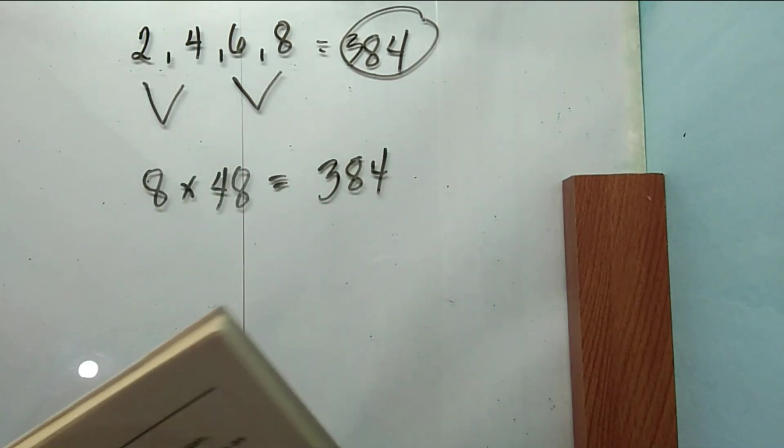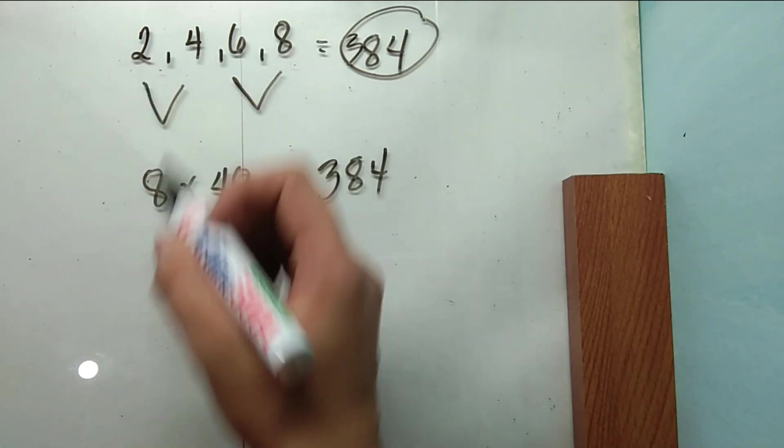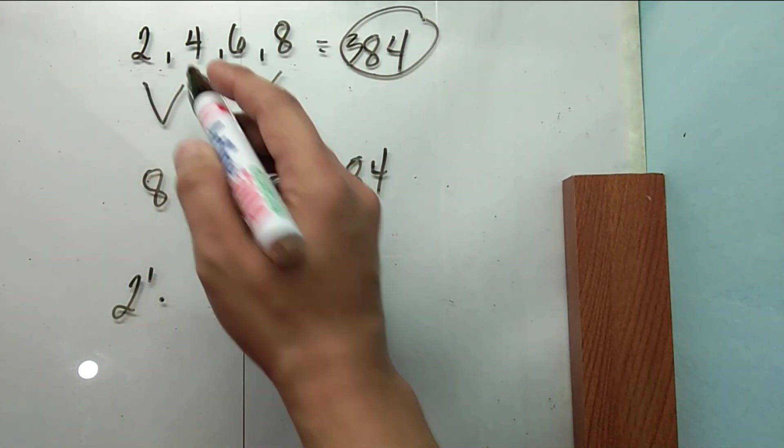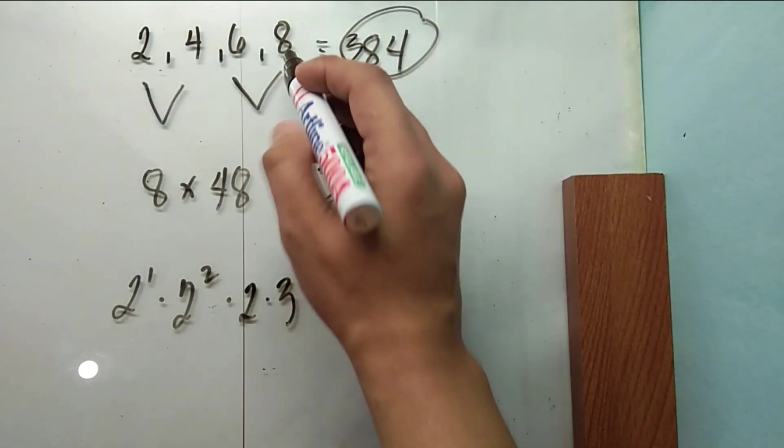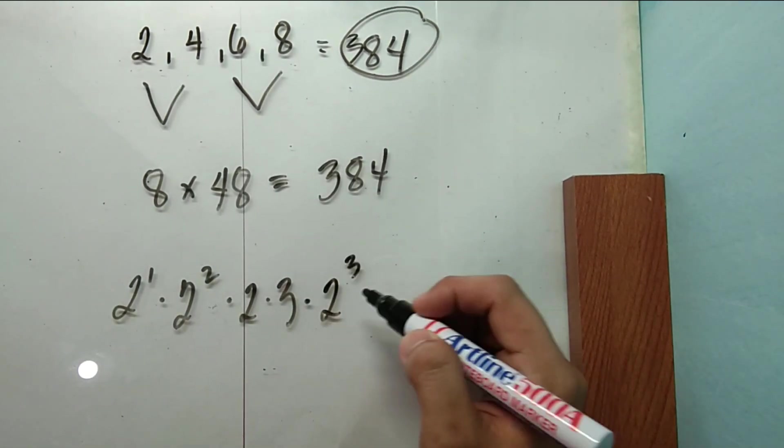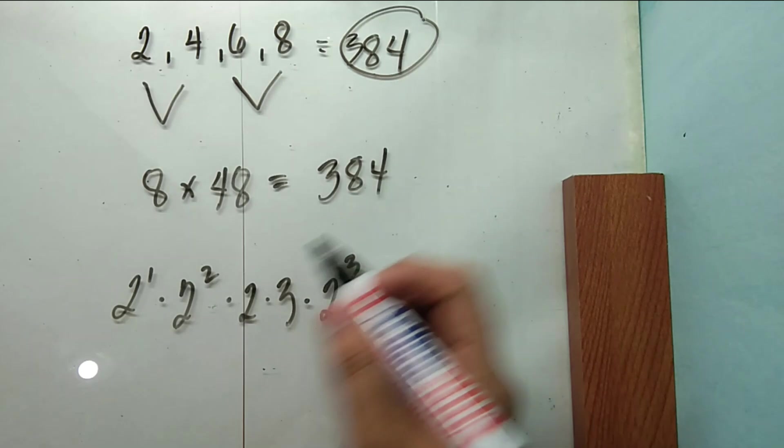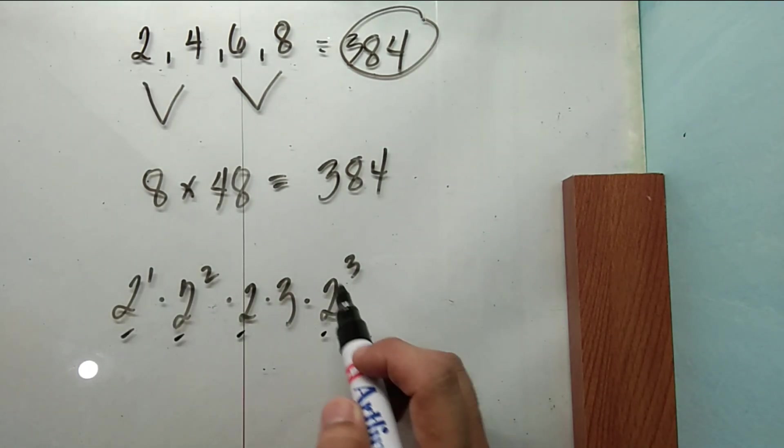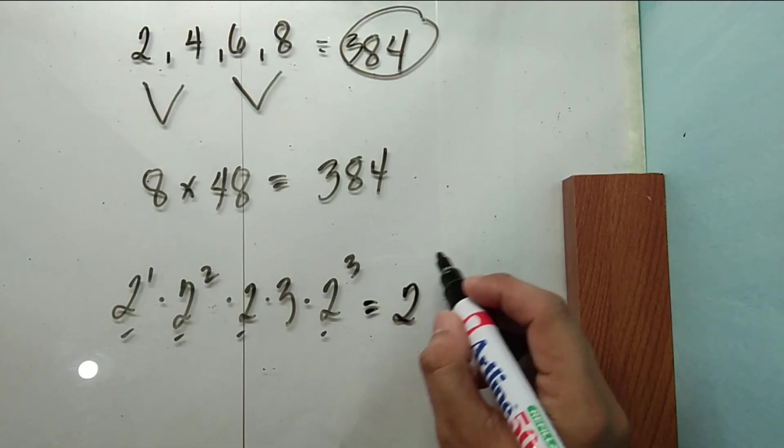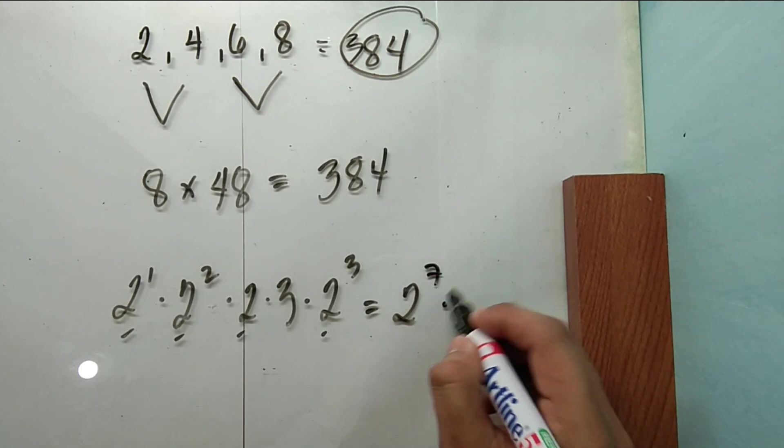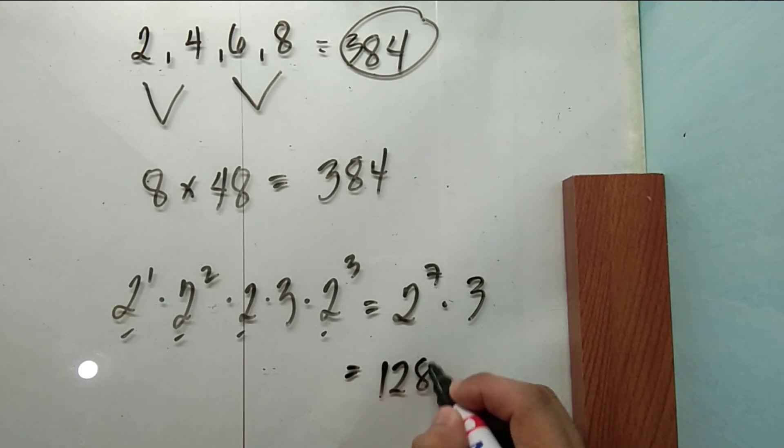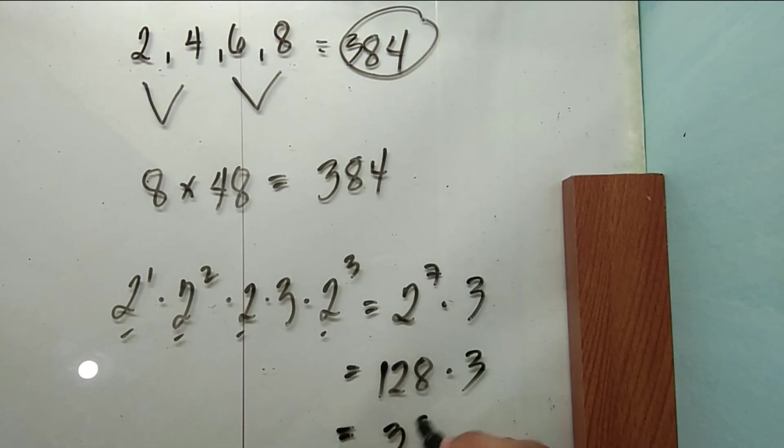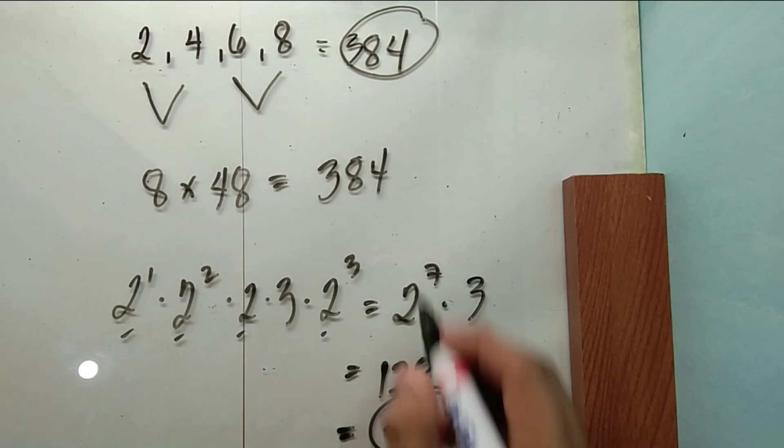The third way is using primes or rewriting the numbers in terms of their primes. Say 2, that would be 2 raised to 1, 4 is 2 squared, 6 is 2 times 3, 8 is 2 cubed or 2 times 2 times 2. Now those with similar bases, you may add their exponent since the operation is multiplication. So this is 2 raised to 7 times 3. Since 2 raised to 7 is equal to 128 times 3, the product is also 384.